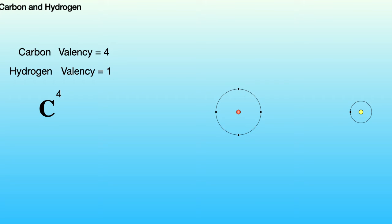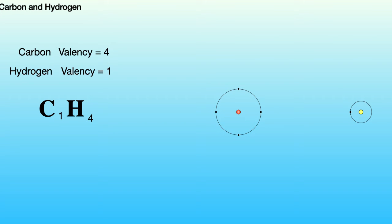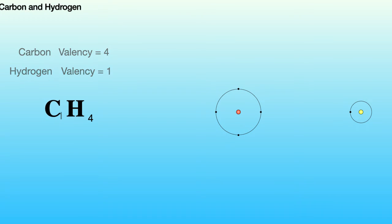There we've got carbon, valency four, and hydrogen, valency one. First of all, we see if these numbers can be cancelled down into anything simpler. With four and one, you can't, so we're just going to leave these as they are. Then once you've got that sorted, you cross them over like that. We don't bother writing ones, so our formula is CH4.